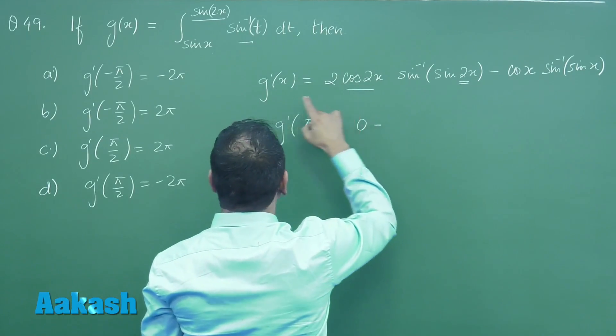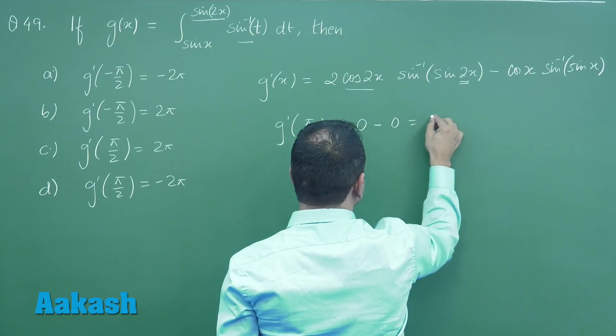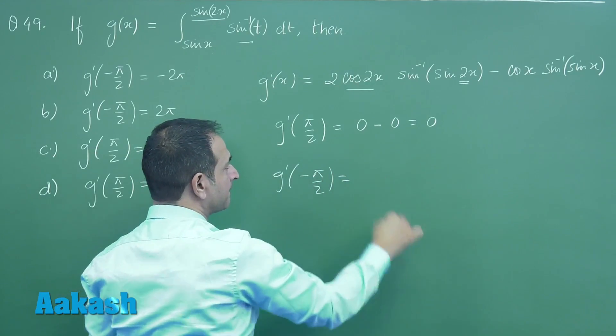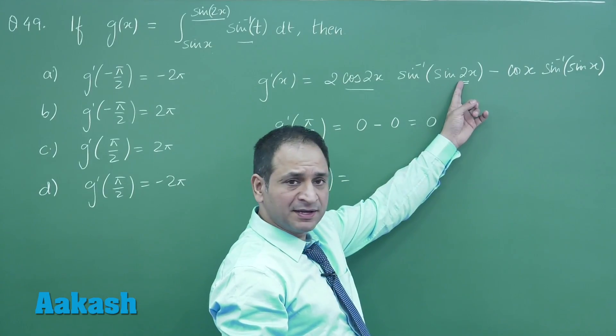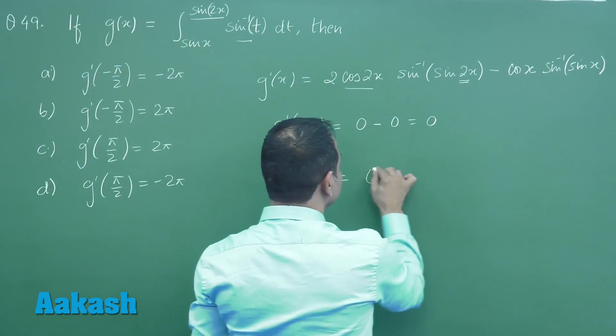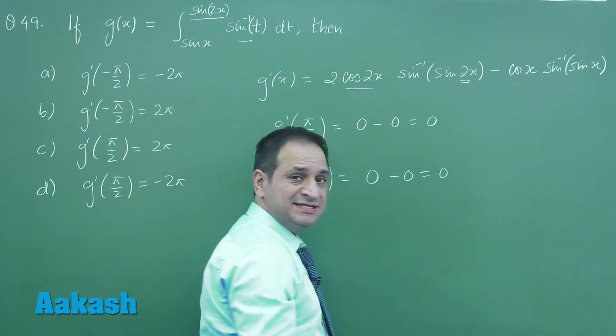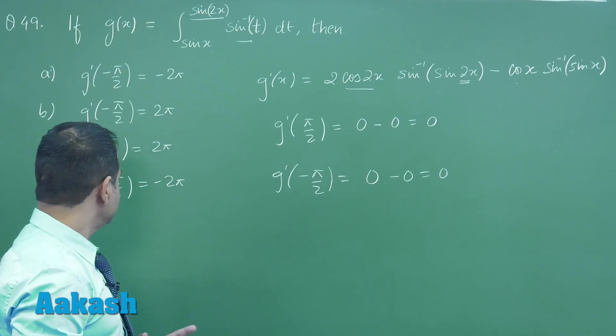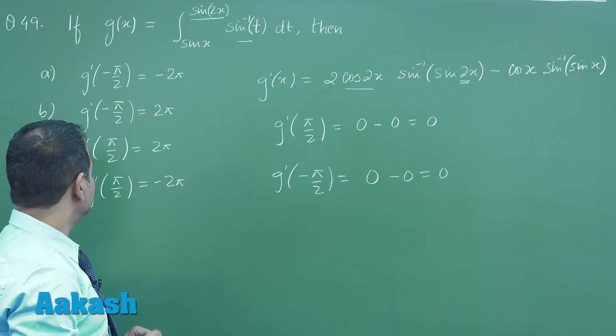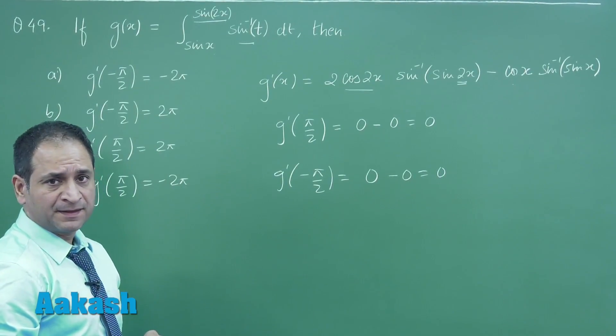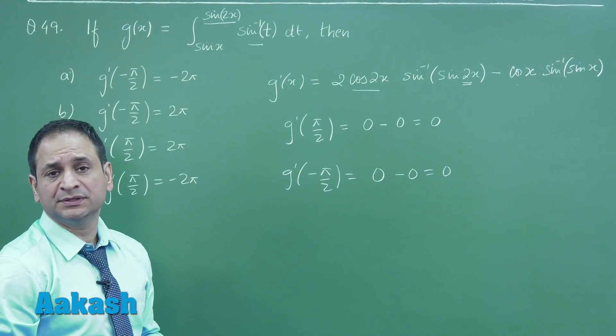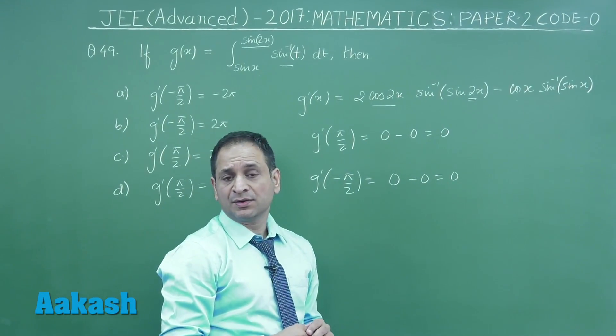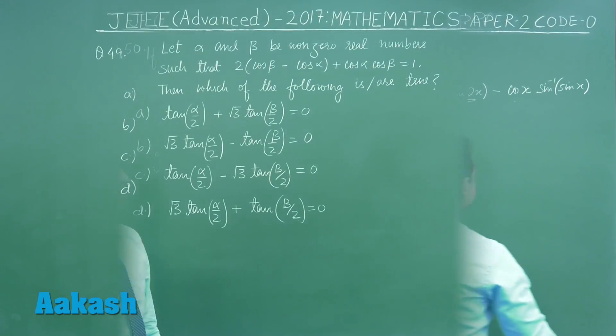Again by substituting minus pi by 2, you can notice here this term will become 0 and the inverse will become 0, and this term will also become 0, so the value at both these points is 0. So none of the options is correct. So this is a question in which none of the options is correct and it's actually related to the wrong options here. So we can't go for any of the correct options here. So this is a question which is actually with the wrong options. Let us move on to the next problem.